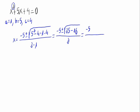Afterwards we have minus 5 plus or minus the square root of 9 divided by 2. So minus 5 plus or minus the square root of 9 is 3 divided by 2.